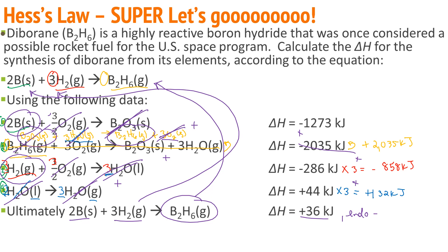So what we're doing here is taking the reaction mechanism given to us, manipulating it as needed to get the balanced equation. Then, once we can add those together, we just add those enthalpies together to get the overall enthalpy of the reaction.